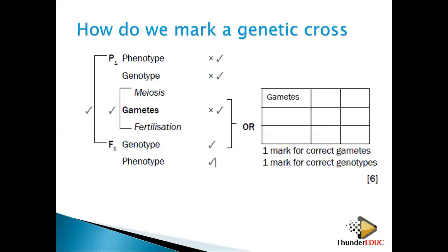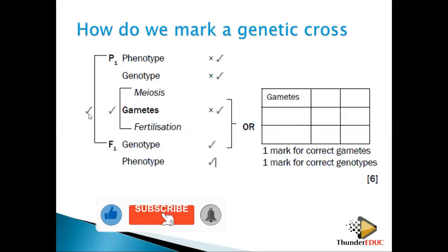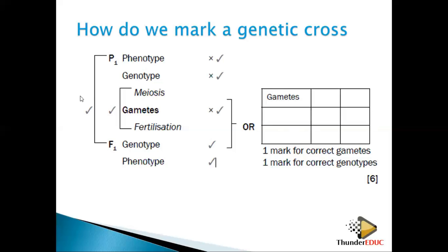When marking, there is a compulsory mark in the genetic cross. For example, if P1 and F1 is the compulsory mark and the question is worth six marks but there are seven marks available — if you didn't get P1 and F1 correct, we first deduct that compulsory mark and give you only five of the remaining marks. So make sure you complete the cross and maximize all the marks.